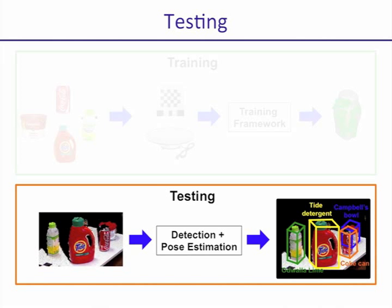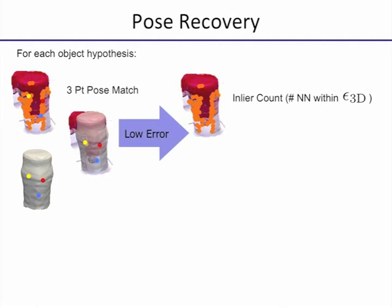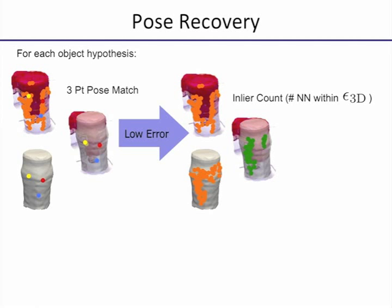At test time, we are given a point cloud and image of a number of objects atop a supporting plane. Our task is then to detect and estimate the pose of each object in the scene. Our segmentation algorithm is fairly standard, so I'll assume we have the individual object clusters in the scene. For each object hypothesis in our training set, we then run a pose recovery procedure. We take the feature correspondences between the test cluster and our training model, and we sample three of these correspondences in order to compute a transformation between the test cluster and the training model.